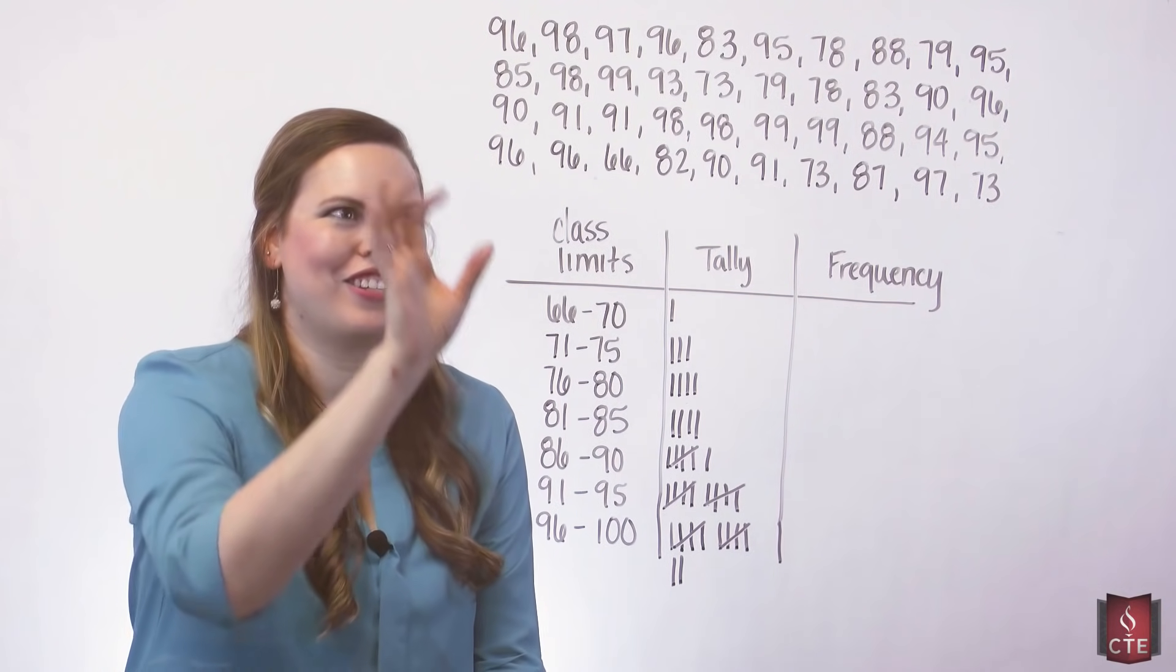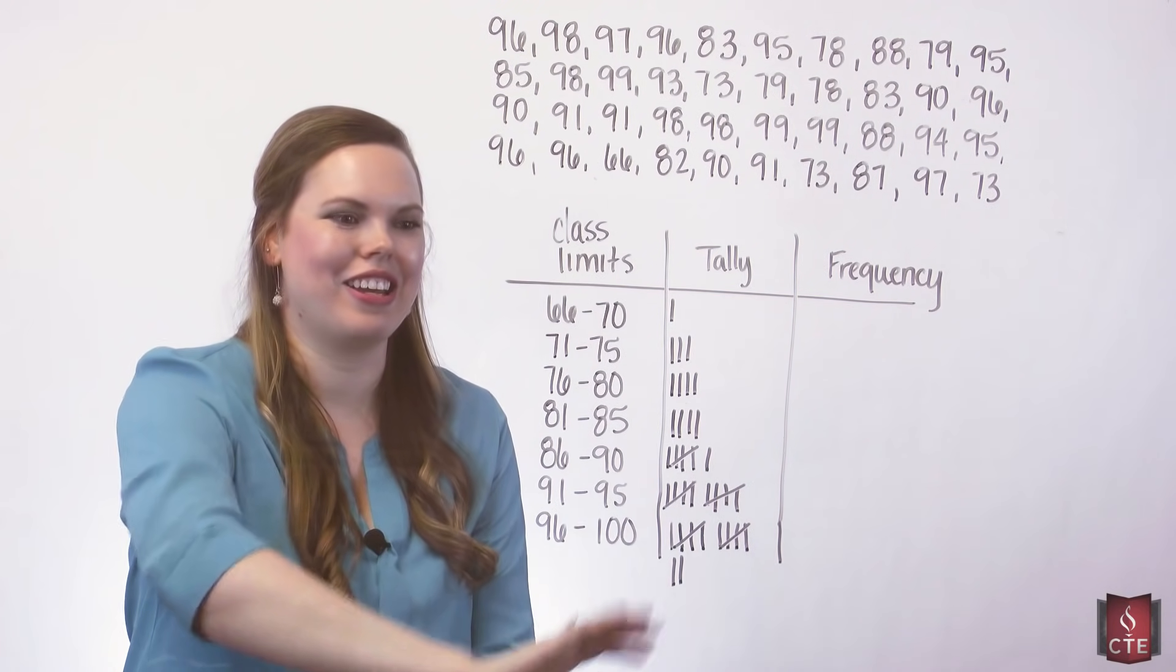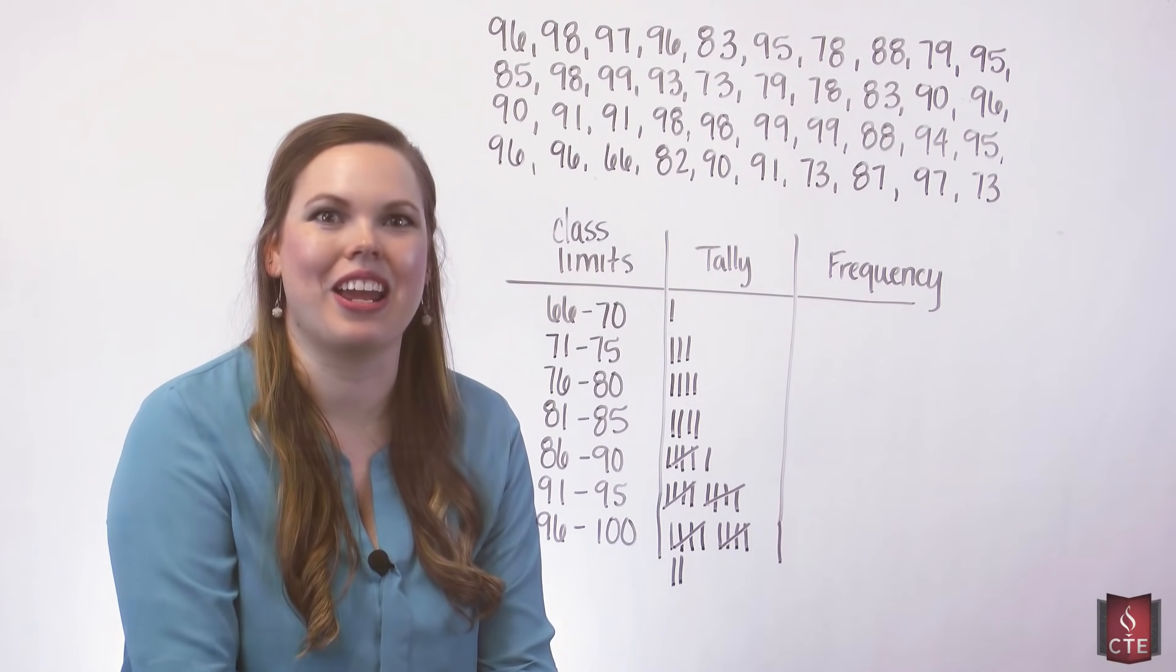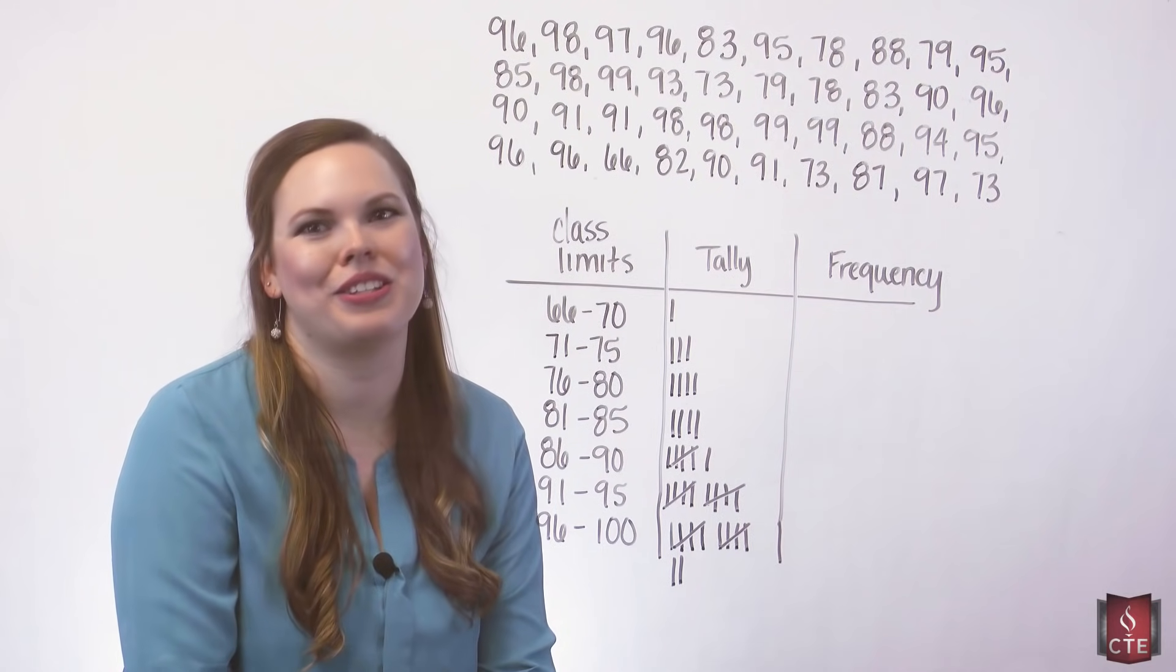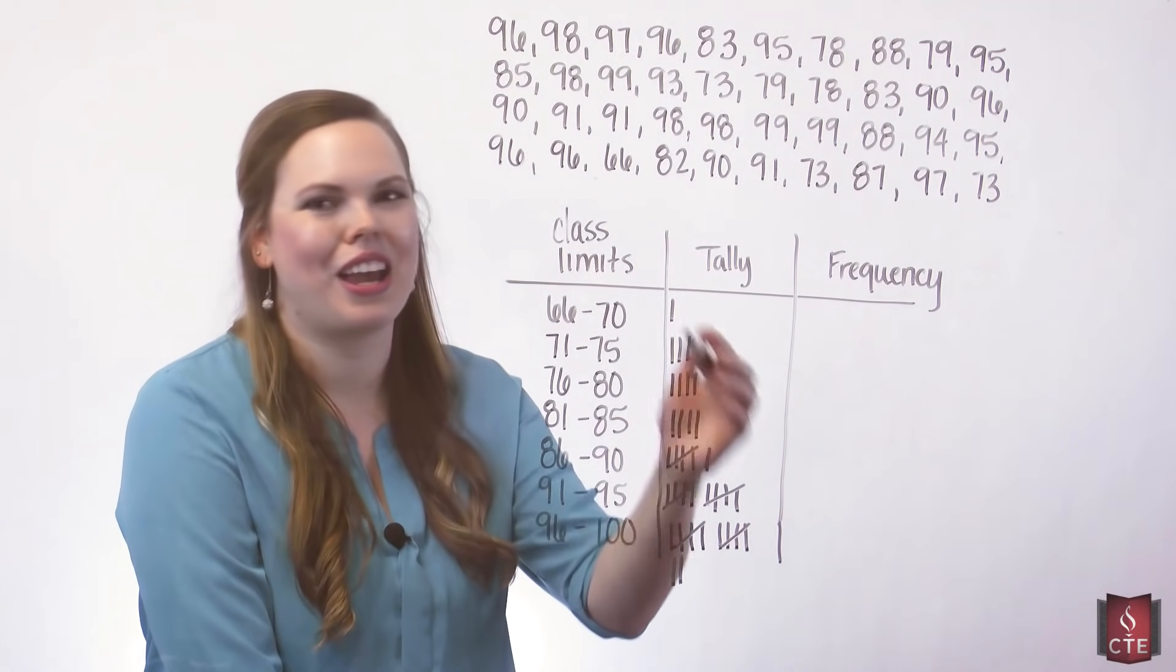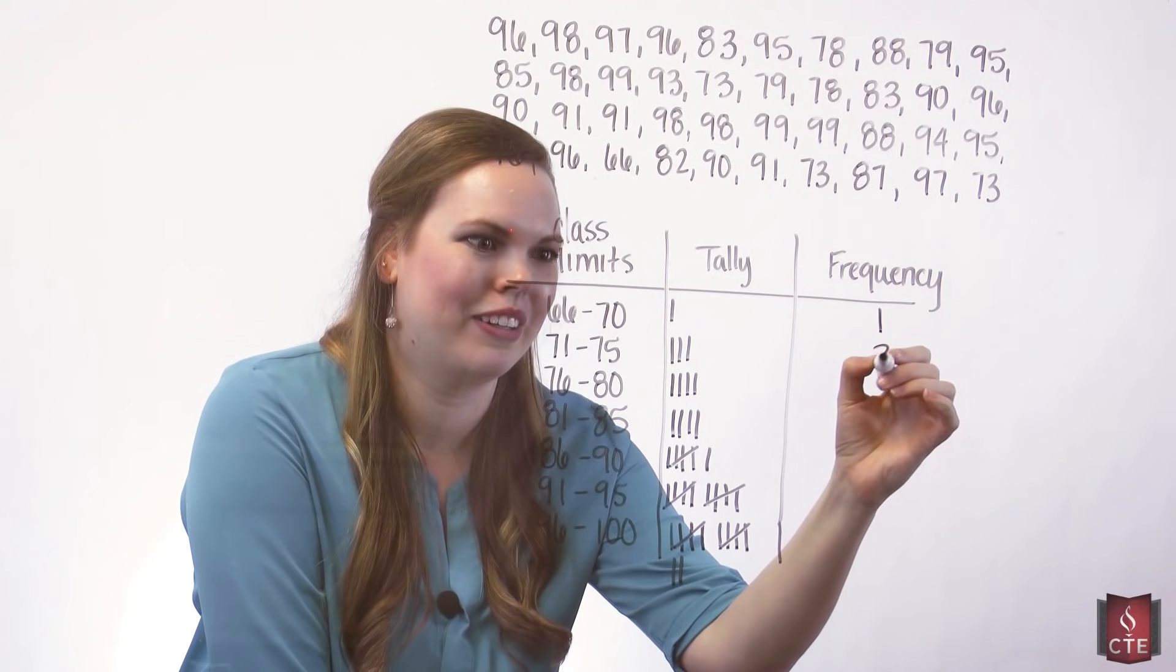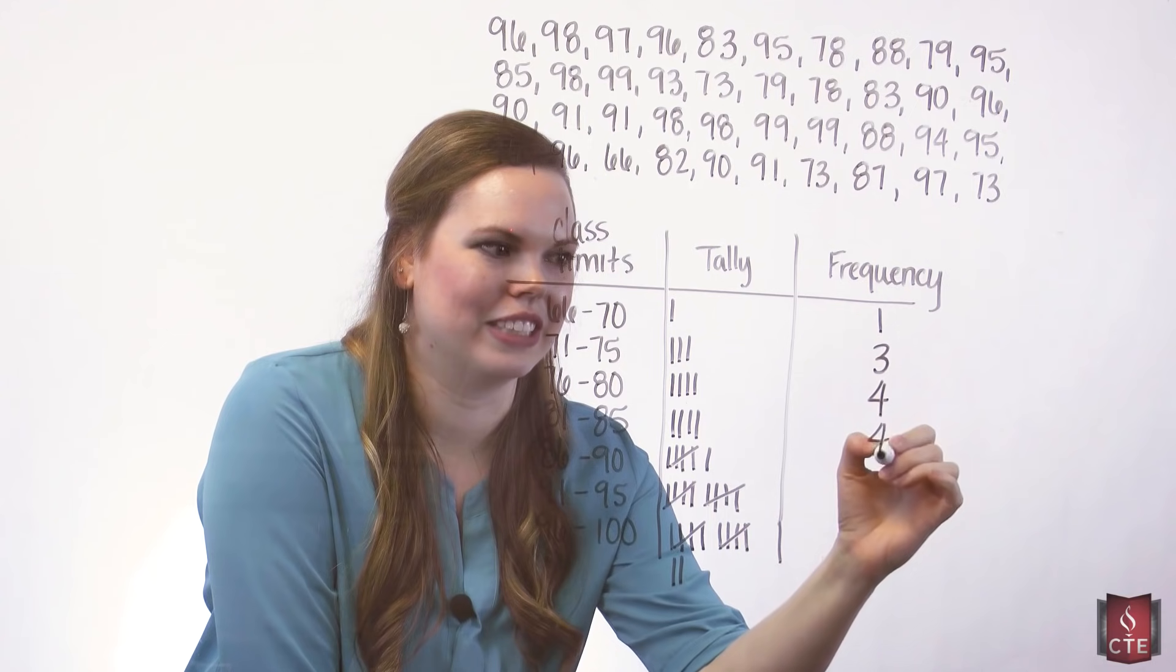All right, so I just tallied up the data, got it into the frequency distribution tallies here. And now, I can count up my tallies and record my frequencies. The tallies are just to get us to be able to record our frequency. Count them up and we get our frequencies.